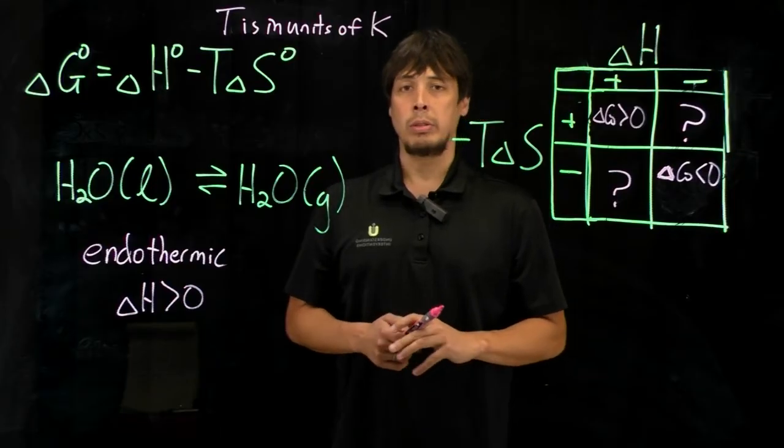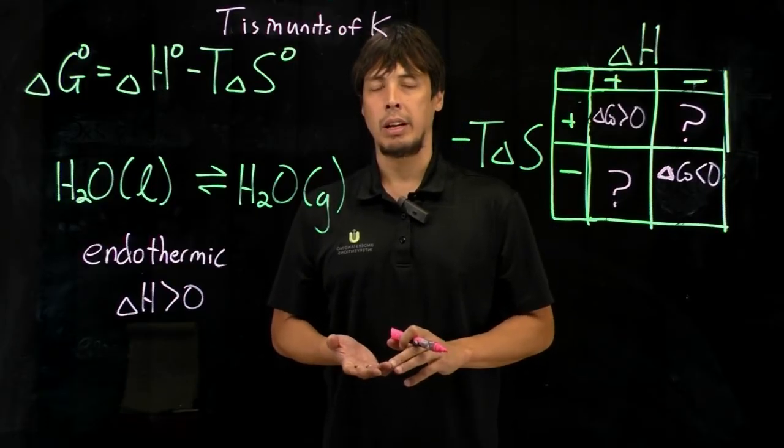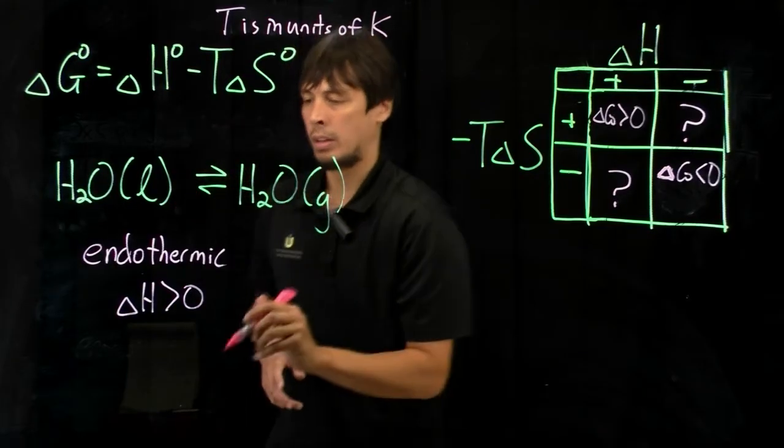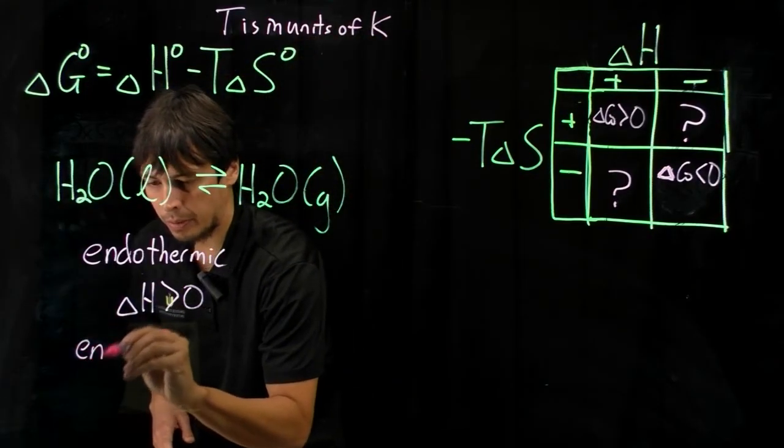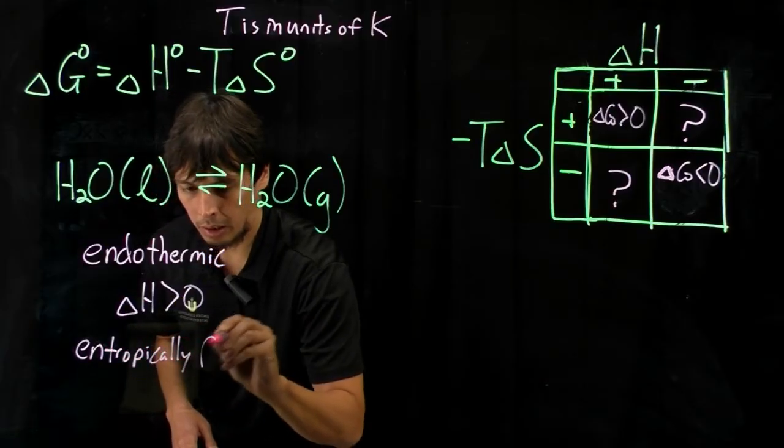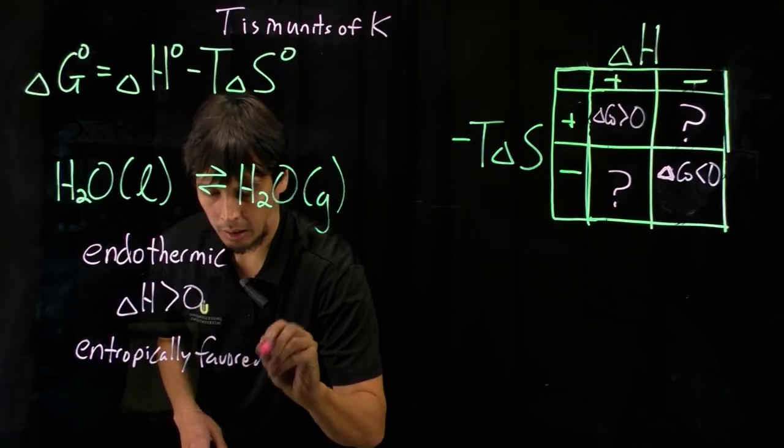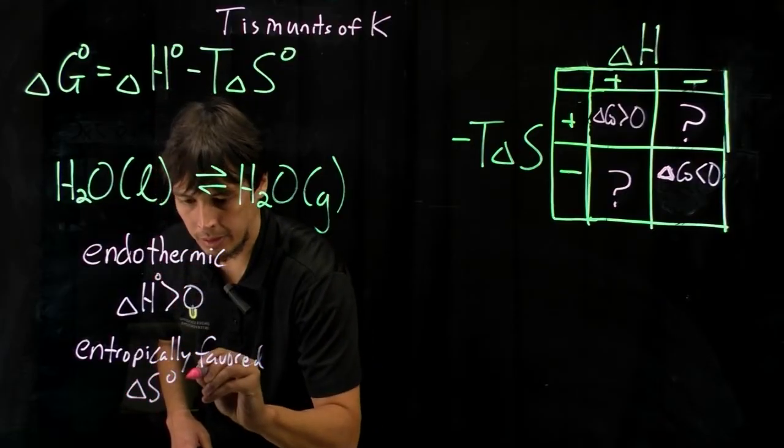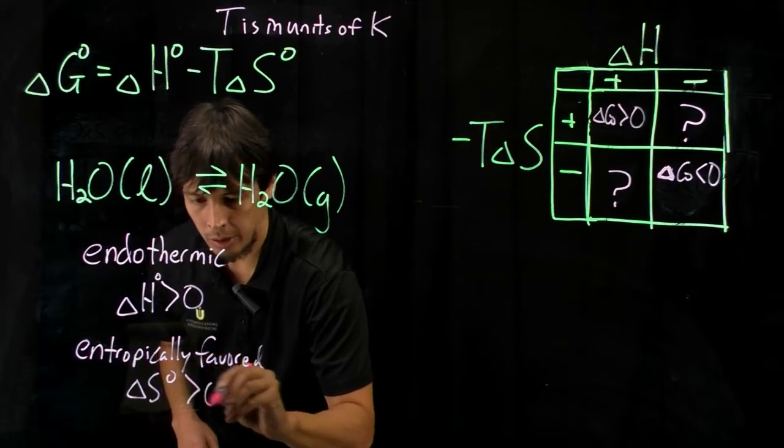Also by using the definition that entropy is disorder, gas is more disordered than a liquid. So we know that this is also entropically favored. So delta S is going to be greater than zero.